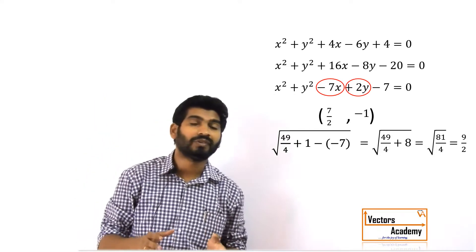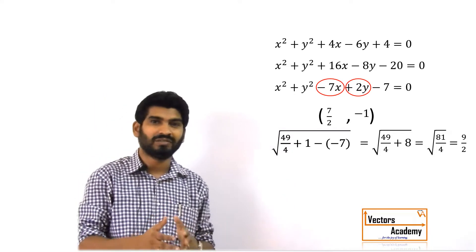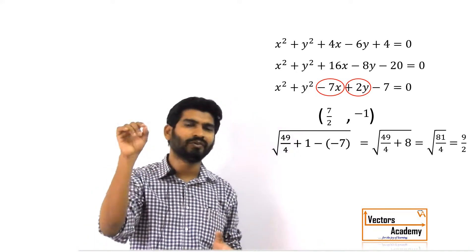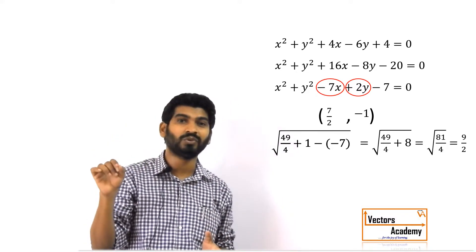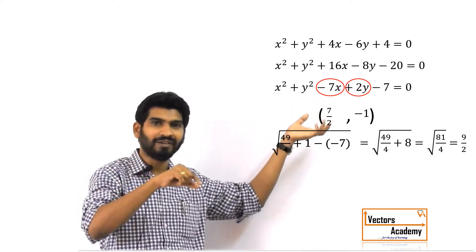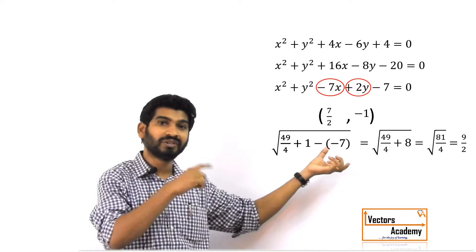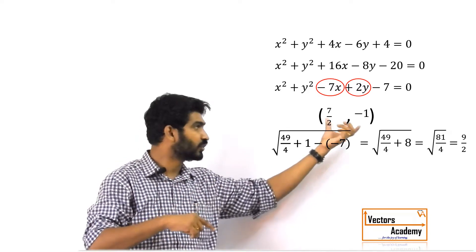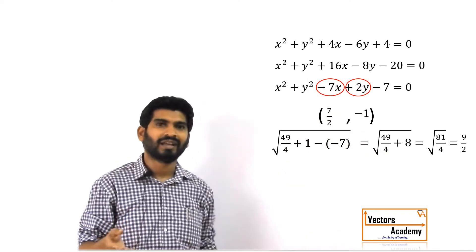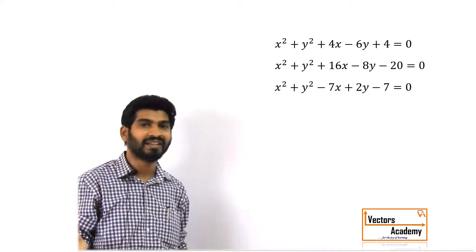This is how we find the center and radius quickly. We do not need to write out values of 2g or 2f every time. Just multiply the coefficients of x and y by half to get the center, then square those coordinates, subtract the value of c, and take the square root to get the radius. Once you have these basics down, let us move on to some simple JEE questions.